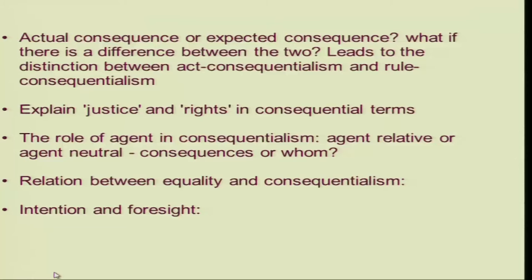What about the actual consequence or expected consequence — what is the object of judgement? What if there is a difference between the two, as we clearly saw in the case talked about just now? It leads to a distinction between act consequentialism and rule consequentialism — we will talk about that in detail. And then there are the difficulties that the consequentialist faces: he is trying to explain justice and rights in consequential terms. The role of the agent, the consequence for the individual or for the group. The consequences related to the agent, or independent of the agent. There are various questions that we need to tackle, especially whether there is a relation between equality and consequentialism.